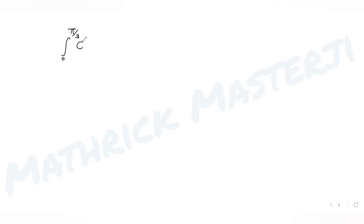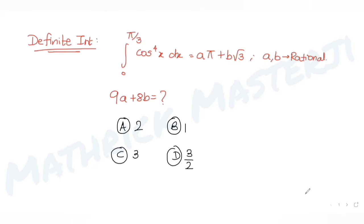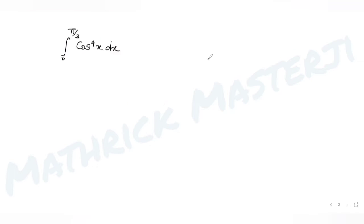The integral we have is from 0 to π/3 of cos⁴(x) dx. First, let's solve this integral and then equate it with aπ + b√3 to get a and b. We'll start by simplifying cos⁴(x).